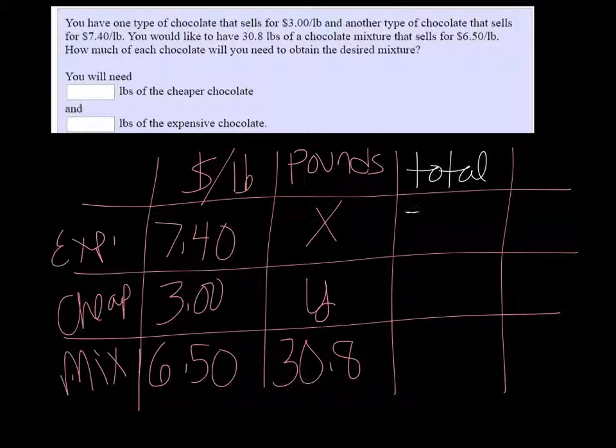And that's 7.4X and 3Y. And then we need to multiply 6.50 times 30.8 to know what the total of that is. So 200.2.